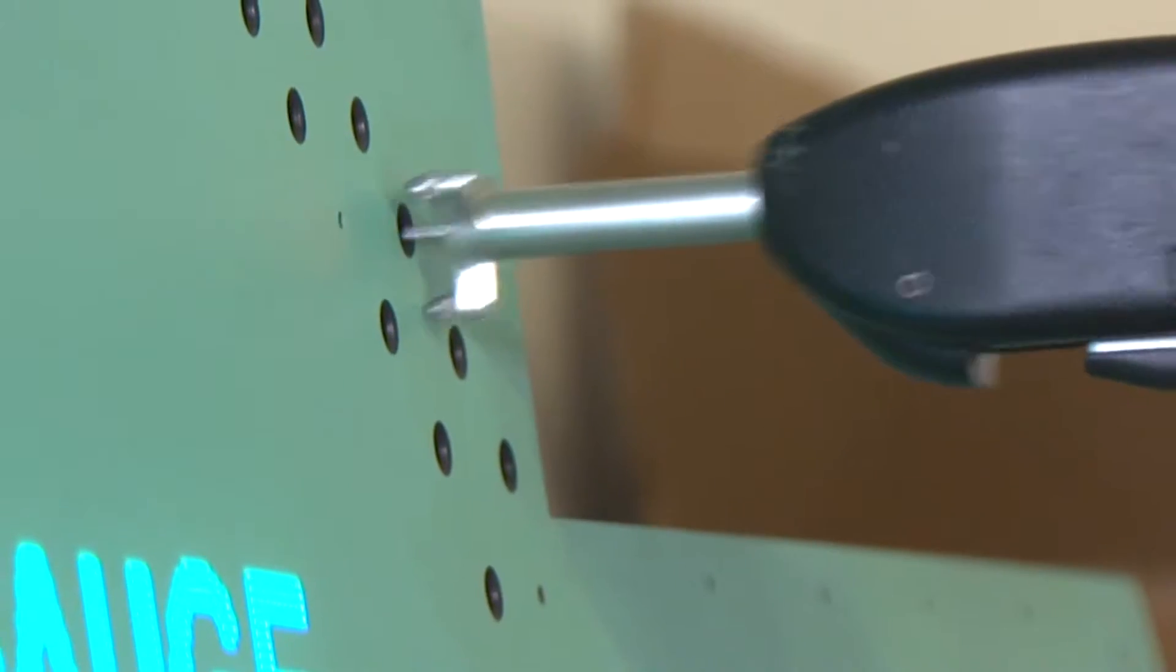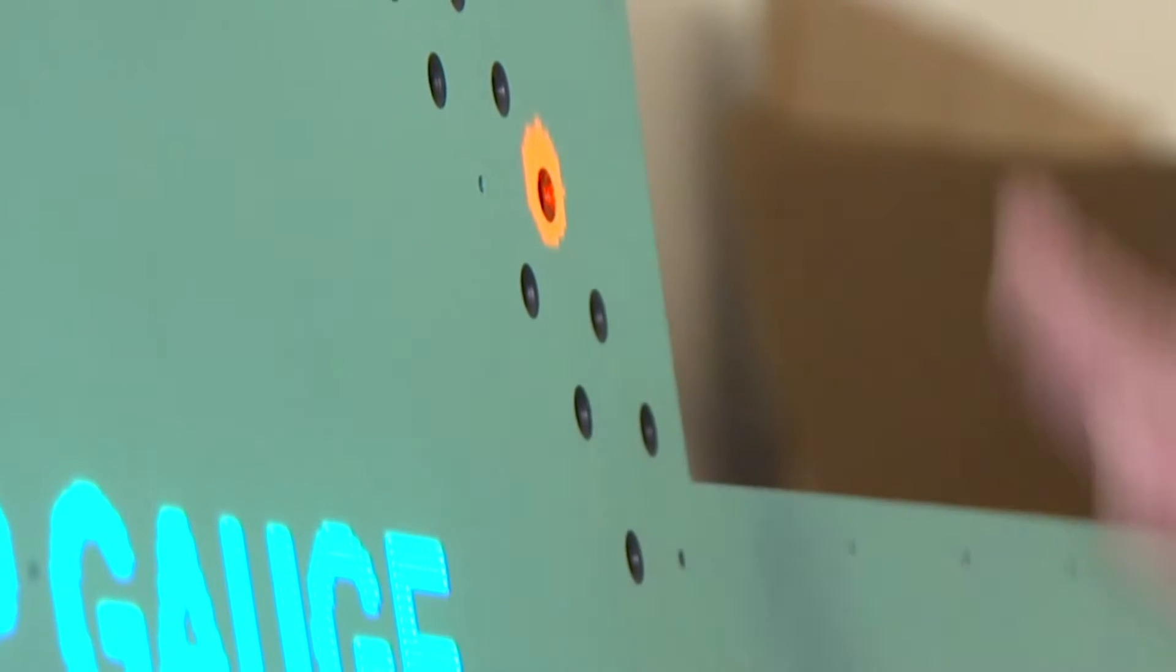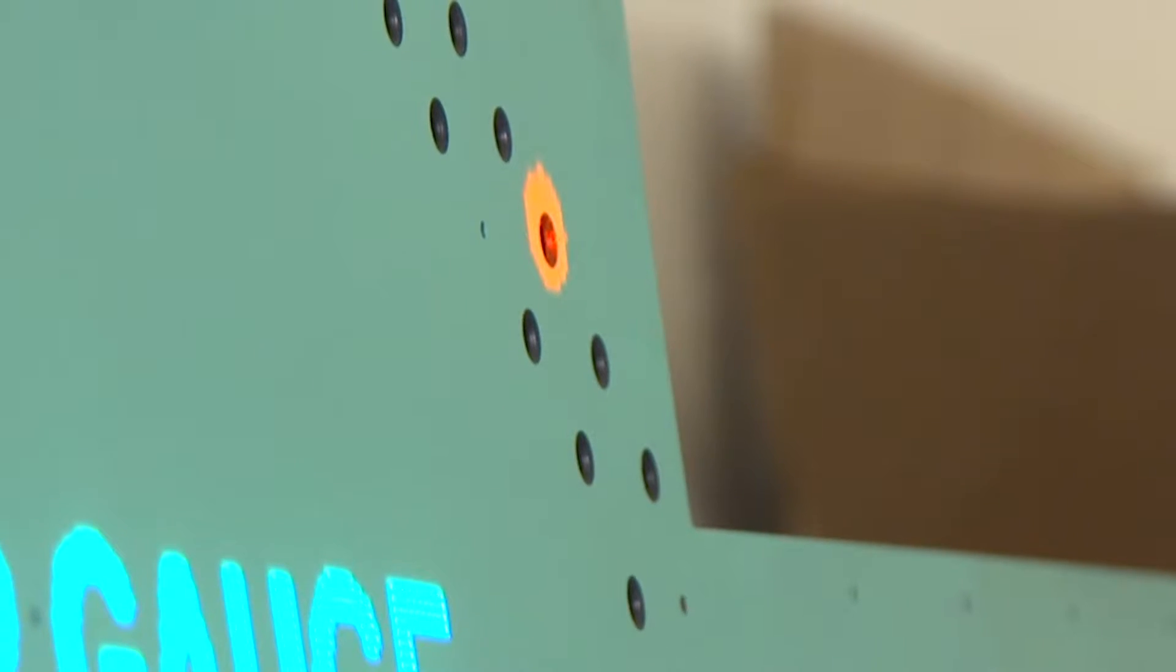When there is a variation in the thickness from spec, the hole turns from blue to a red-orange color, indicating that this measurement is out of spec.